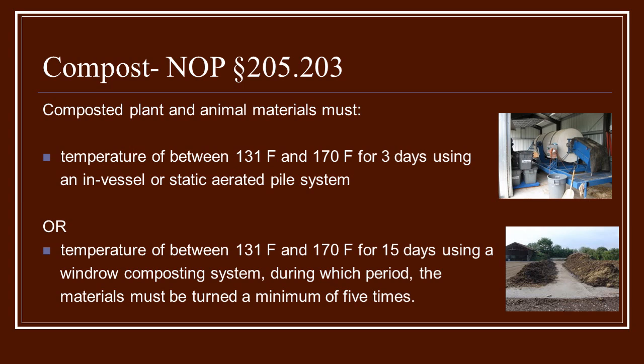A great way to add organic matter to your soil is through compost — composted plant and animal matter. The National Organic Standards have very specific guidelines on how compost can be used and how it must be treated before you're allowed to spread it onto your land. One of the first things is the temperature. Depending on how you're making your compost, if you're doing it in a static or vessel aerated pile system, the temperature needs to be between 131 and 170 degrees for three days. Or between 131 and 170 degrees for 15 days if you're using the windrow composting system, during which the windrows need to be turned a minimum of five times.